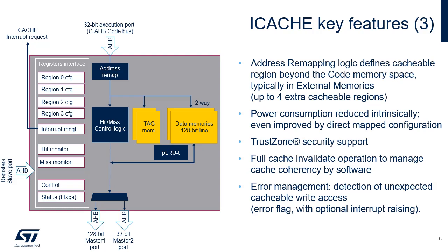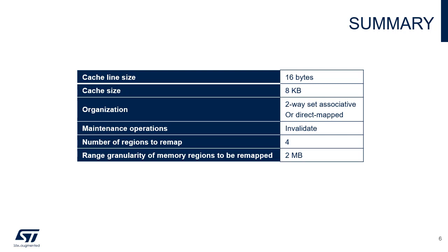The iCache does not manage AHB bus errors returned to master 1 or master 2 ports; it simply forwards the AHB response received on the master port back to the processor. This table summarizes the characteristics of the instruction cache: 16-byte cache line size, transferred through a burst transaction of four words or a single data transaction of one quad word. Two-way set associative 8-kilobyte cache that can be configured as a direct mapped cache. A global invalidate maintenance operation is supported. iCache defines an alias address in the code region for up to four external memory regions.